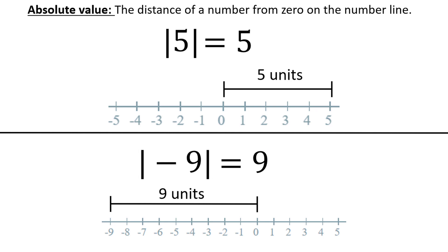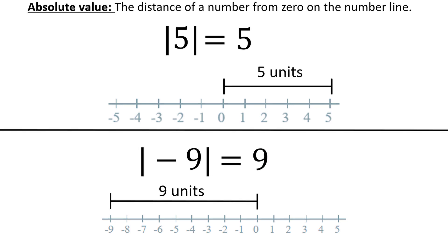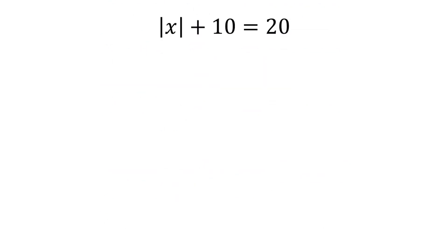Let's look at some equations involving the absolute value. Consider the absolute value of x plus 10 is equal to 20. In order to solve this problem, first isolate the term with the absolute value to one side of the equation, meaning we must subtract 10 from both sides.